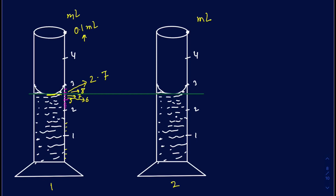Some people might say it's 2.75 milliliters — right in the middle — or someone might say it's 2.76, or 2.74, and that's completely okay. The readings that come directly off the graduated cylinder — the 2 and the 7 — are certain digits in every reading. The last digit, whether 4, 5, or 6, is your estimated digit.